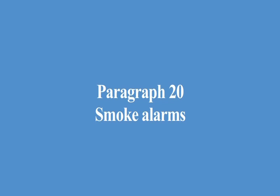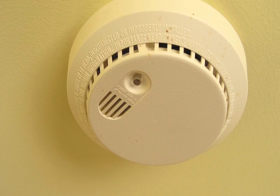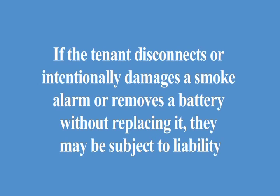Paragraph 20, Smoke Alarms. This paragraph indicates that the property must be equipped with smoke alarms in certain areas of the property. If the tenant requests additional installation, inspection, or repair, it must be in writing. If the tenant disconnects or intentionally damages a smoke alarm or removes a battery without replacing it with a working battery, they may be subject to liability. Be sure to review Subchapter F, Chapter 92 of the Texas Property Code for these requirements.